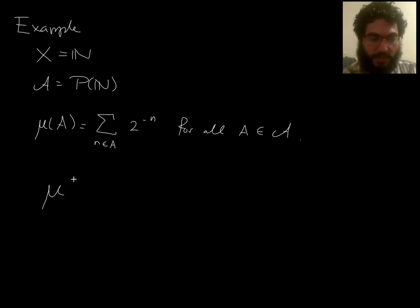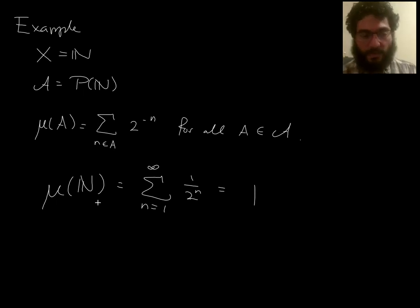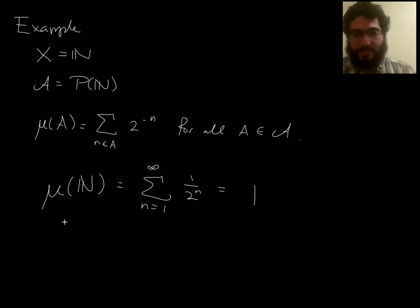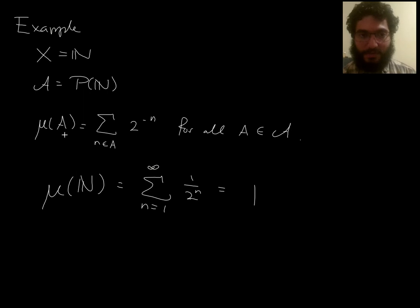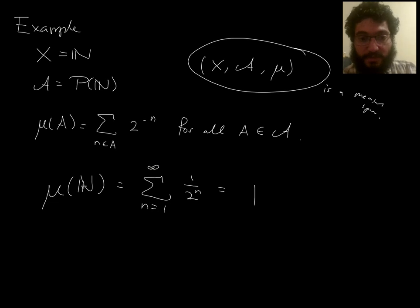What is mu of the set of all natural numbers? It's the sum from 1 to infinity of 1/2^n, which equals 1. So the measure of the largest set — everything — has measure 1. Since mu is a non-negative countably additive function on a sigma algebra, this triple is a measure space. When the measure of the entire space is 1, we call this a probability measure.